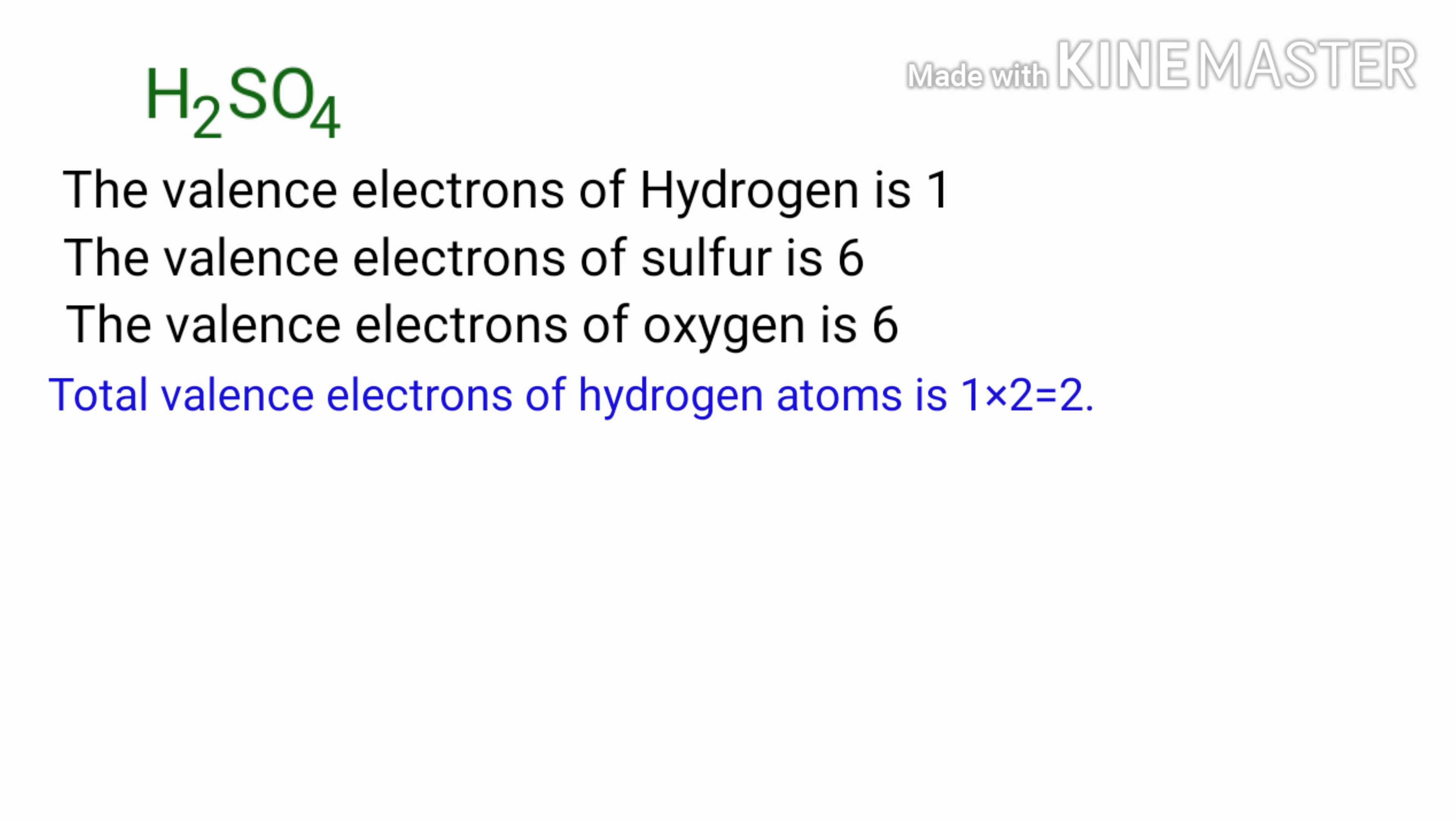There are two hydrogen atoms present. So the total valence electrons of hydrogen atoms is 1 into 2, that is equal to 2.